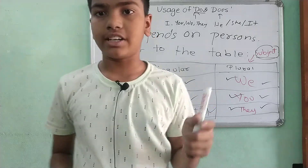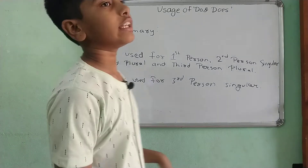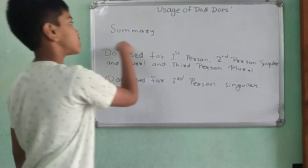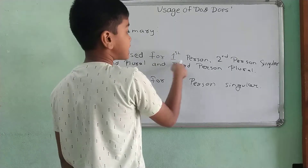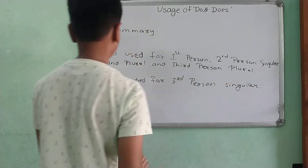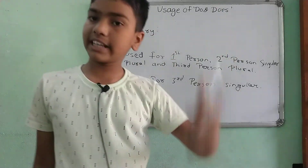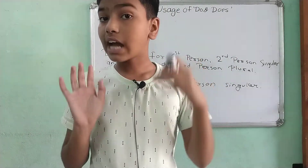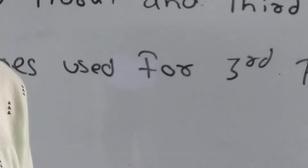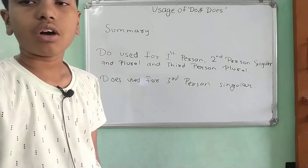Now let's see what we have learned so far. Reading this summary section, you will get each and every point. Summary: 'Do' is used for first person singular and plural, second person singular and plural, and third person plural. 'Does' is used for third person singular only.